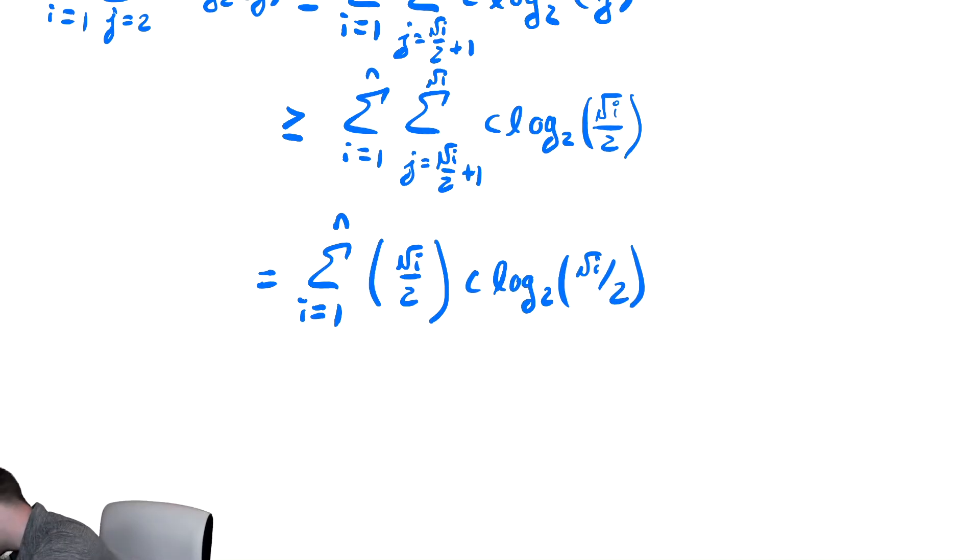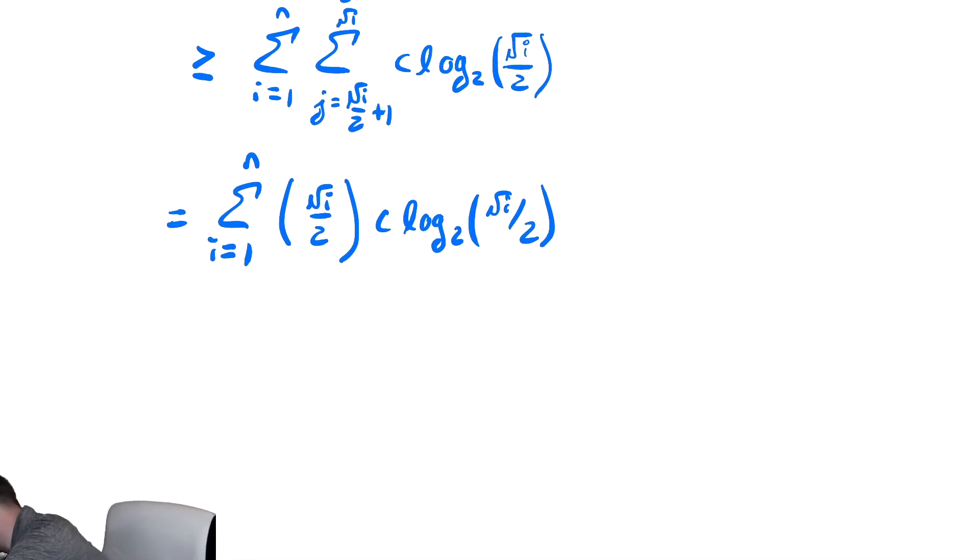For not so obvious reasons at first, I'm going to do some simplification before we start plugging stuff in to cause myself less pain. In particular, I'm just going to start getting fractions and fractions and fractions if I keep going with this. So I'm going to comment on some stuff off to the side that I'm going to use, which is radical i over two, that is inside of that log can be greater than or equal to any power of i that's smaller than one half.